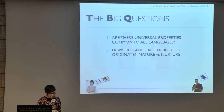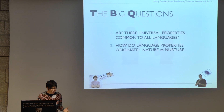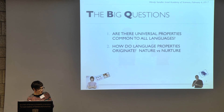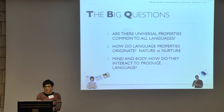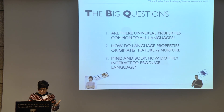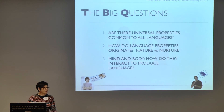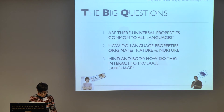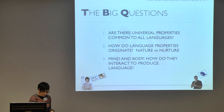The second question is: how do language properties originate? How did language come to be, what are the most basic properties, and how much does nature versus nurture have to do with it? And finally, mind and body — many people believe that language is just a computational system in the mind and that the body is incidental, while others believe you cannot understand language at all unless you look at its interaction with the body. What better way to answer this than by comparing two different physical modalities?